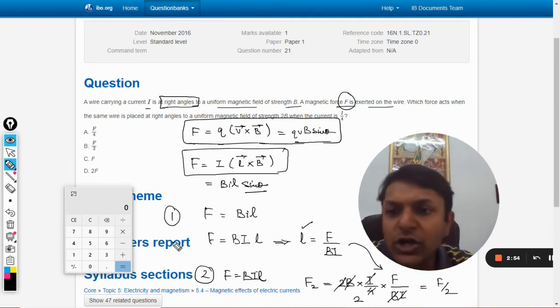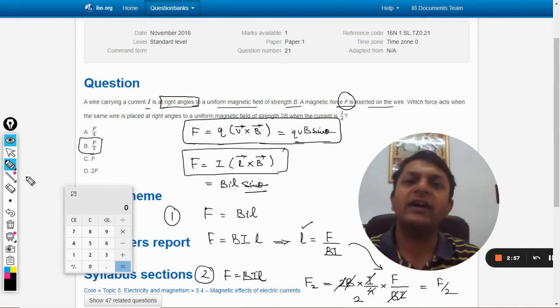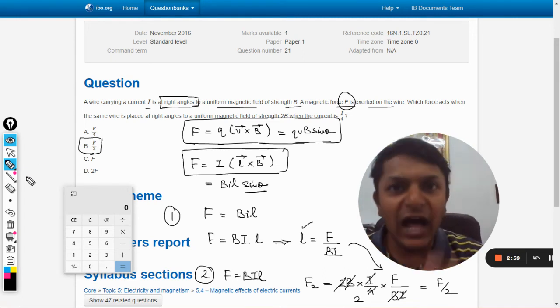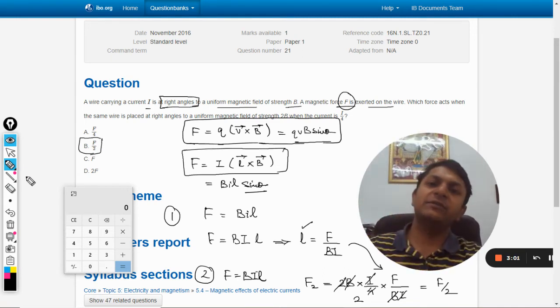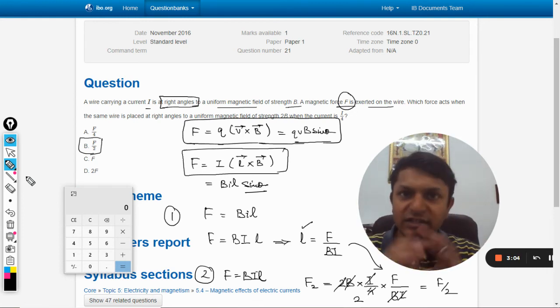So b and i both get cancelled out and this will become two, so it will become f divided by two. So our new force that is acting on the wire in case two will be half of the force that was acting in the previous case.